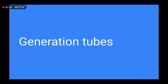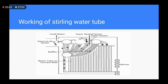Generation tubes, as the name suggests, are used for steam generation in the boiler. These tubes are placed in the path of flue gases so they can absorb more heat and produce steam very quickly.